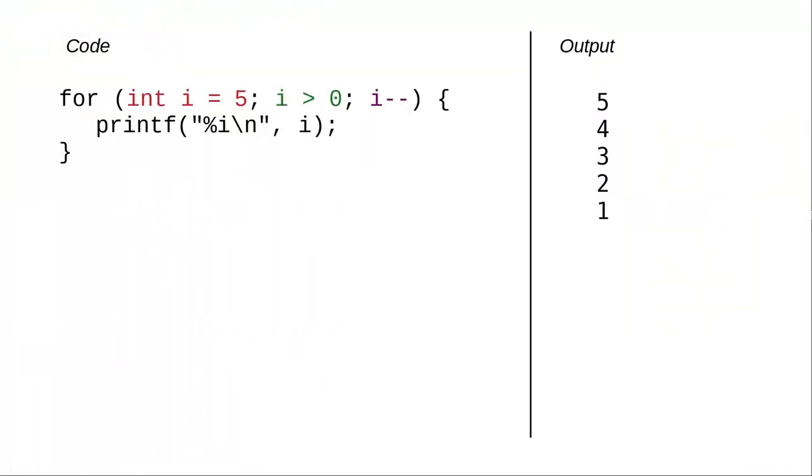There's no law that says a loop has to count upwards. In this case, the counter variable starts at 5, continues as long as the counter variable is greater than 0, and subtracts 1 as the action at the end of each iteration.